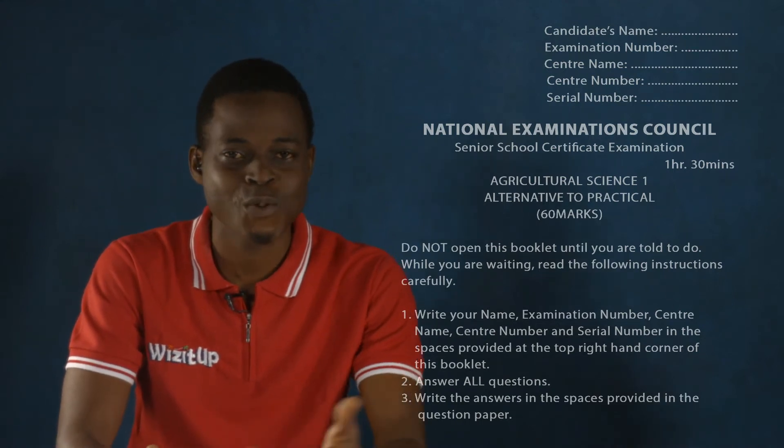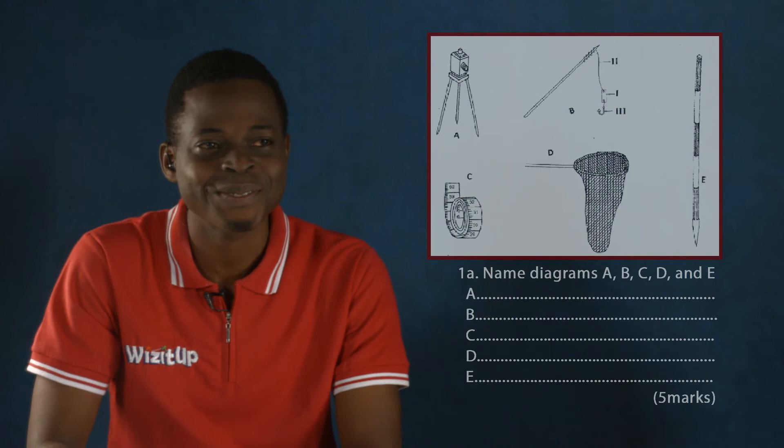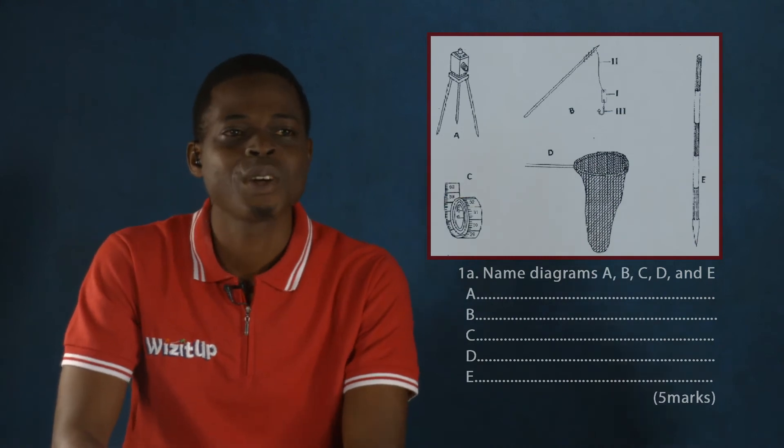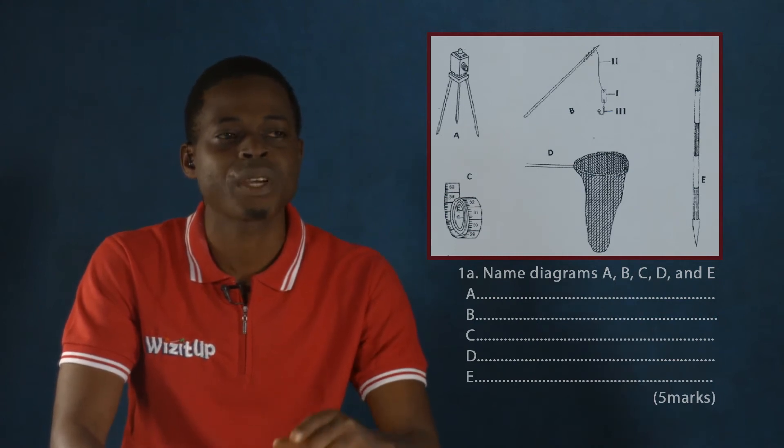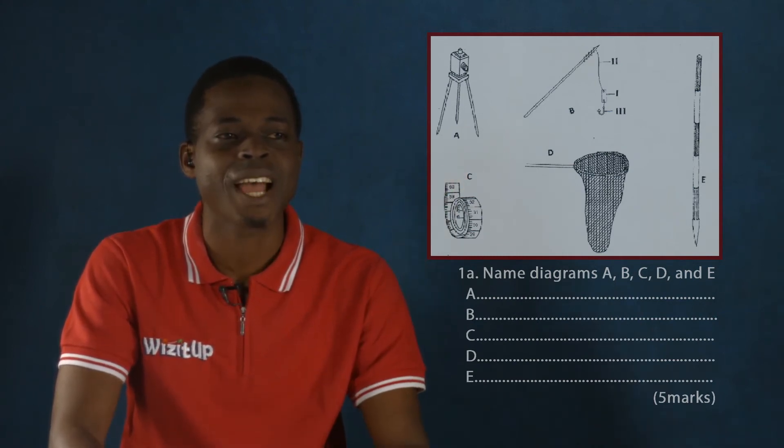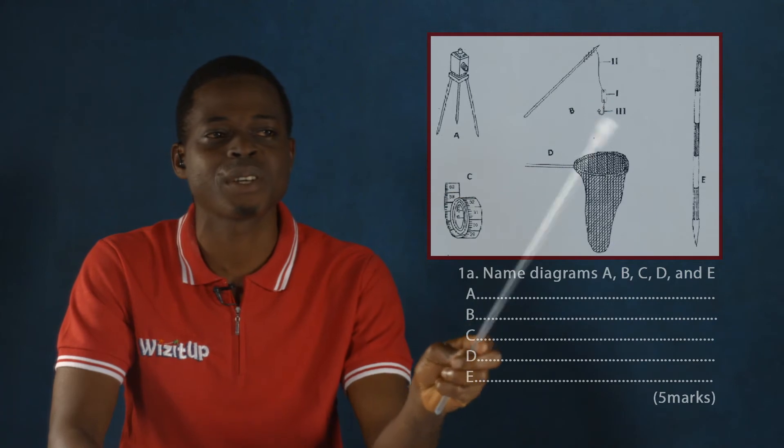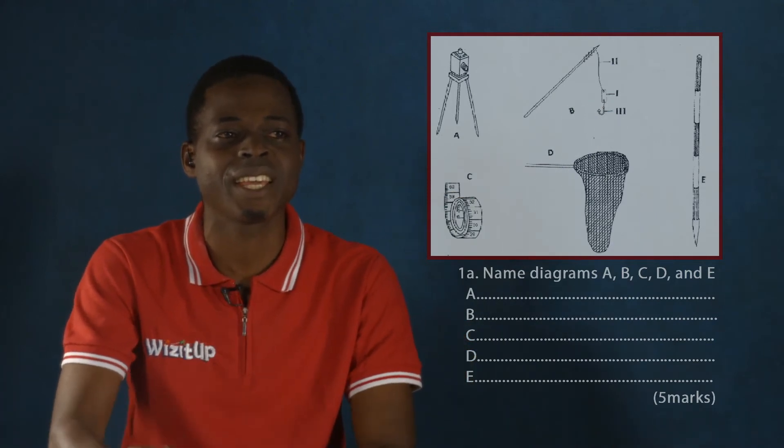Now, let us whiz it up. Now, let us look at the question we have before us. And we can see diagrams and we have various things listed A, B, C, D, and E.